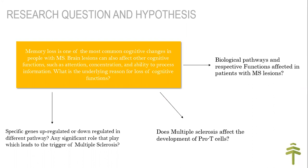The first hypothesis was to find out the biological pathways affected in multiple sclerosis patients and their functions. I also wanted to find out specific upregulated or downregulated genes in different affected pathways. And since T cells are known to be responsible for causing demyelination, I wanted to find out how multiple sclerosis affects the development of pro-T cells, so that T cells become autoreactive and attack the myelin sheath of the axons.